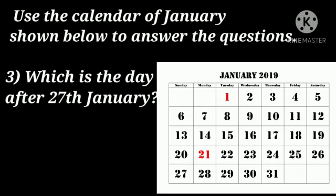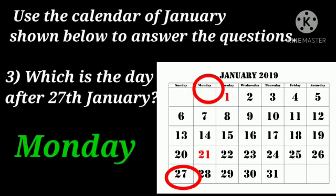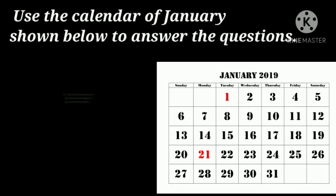Question number three: which is the day after 27th January? Here we have to find out which day comes after 27th January. First we will search 27th January in the calendar. 27th January is on Sunday. So the day after 27th January will be Monday, as Monday comes after Sunday.